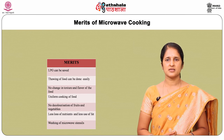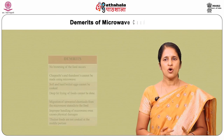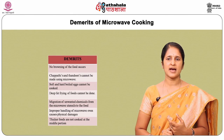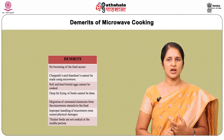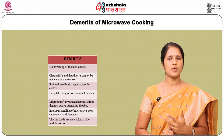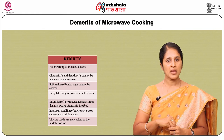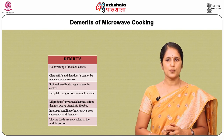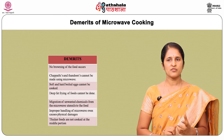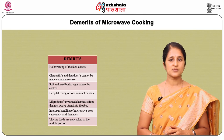Though it has many advantages, there are some disadvantages. No browning of food occurs in a microwave oven due to less cooking time — browning occurs only when a browning unit is present. Chapatis and tandoori foods cannot be made using microwave. Soft and hard boiled eggs cannot be cooked. Deep fat frying is not possible in microwave. Migration of unwanted chemicals from microwave utensils to the food may occur, so microwave-safe utensils should be used. Improper handling causes physical damage. Thicker foods are not cooked at the middle portion as radiation does not penetrate sufficiently, causing easy spoilage.